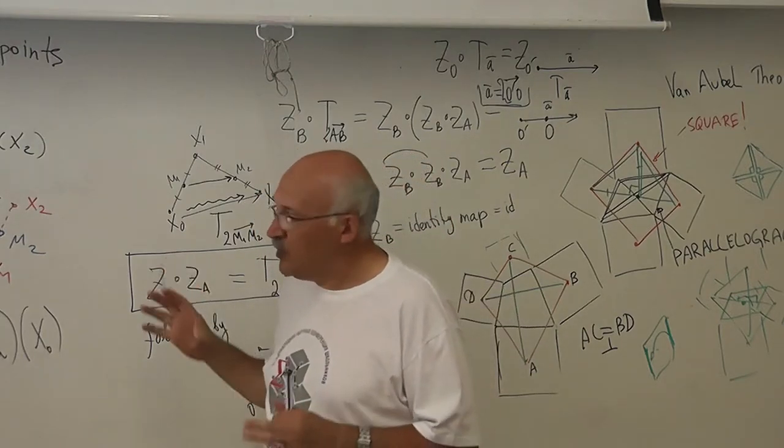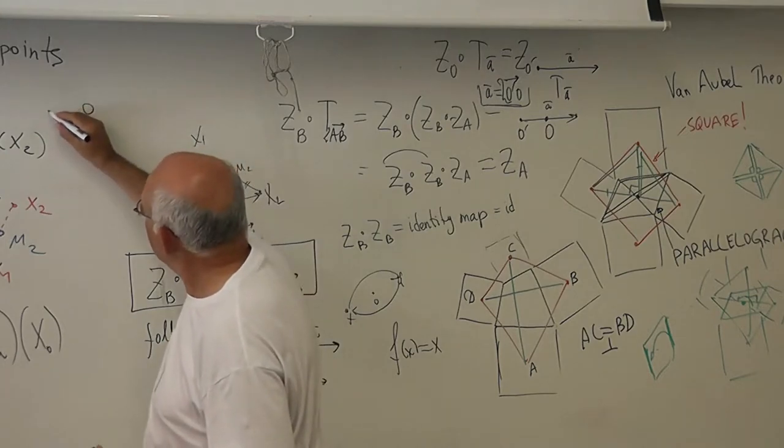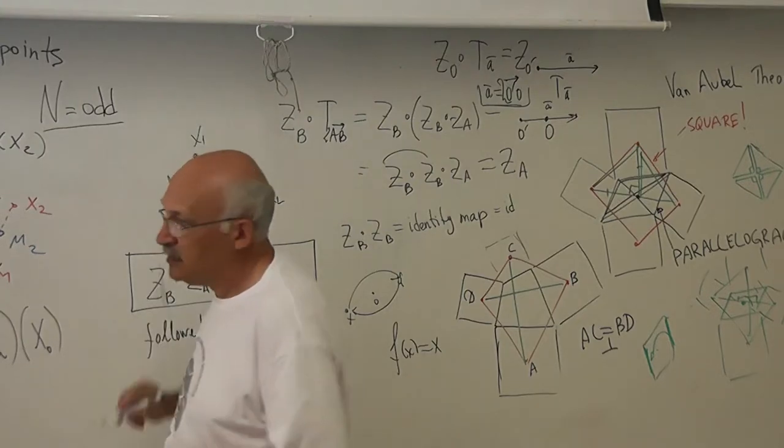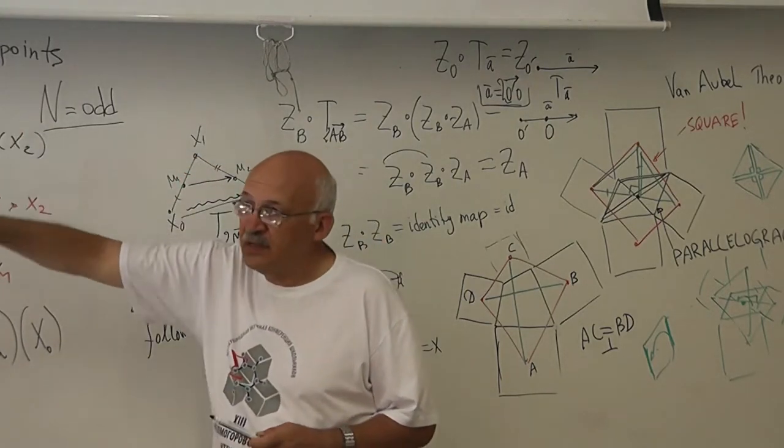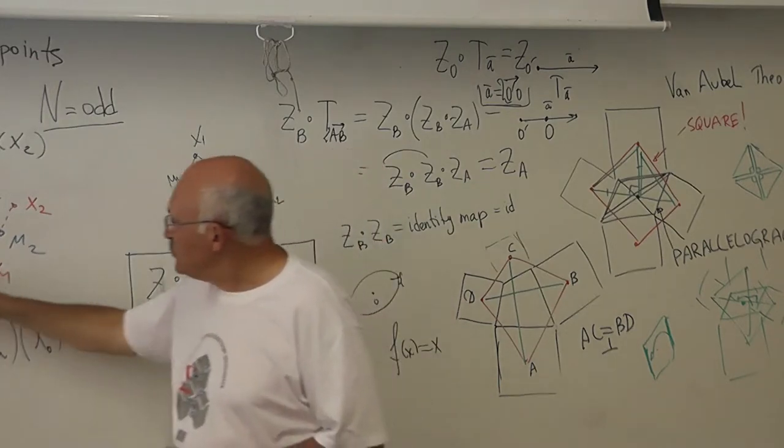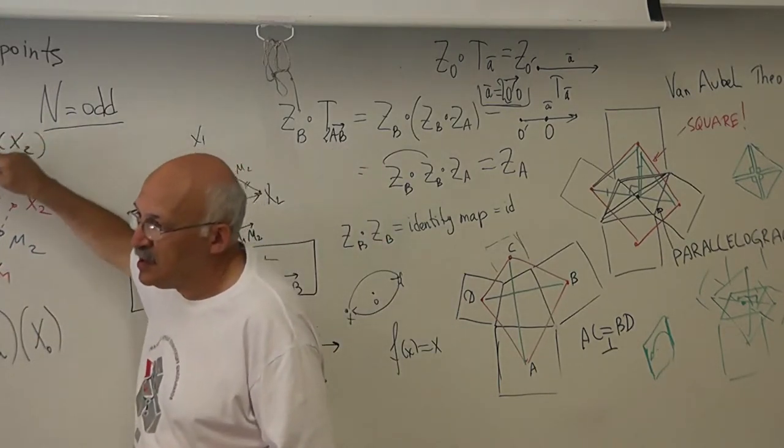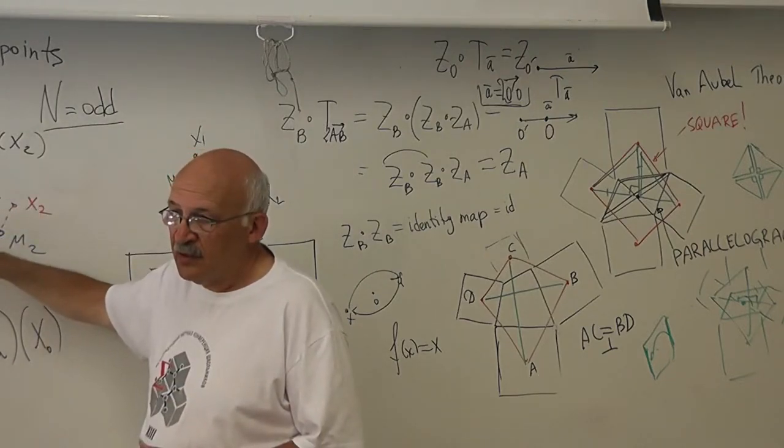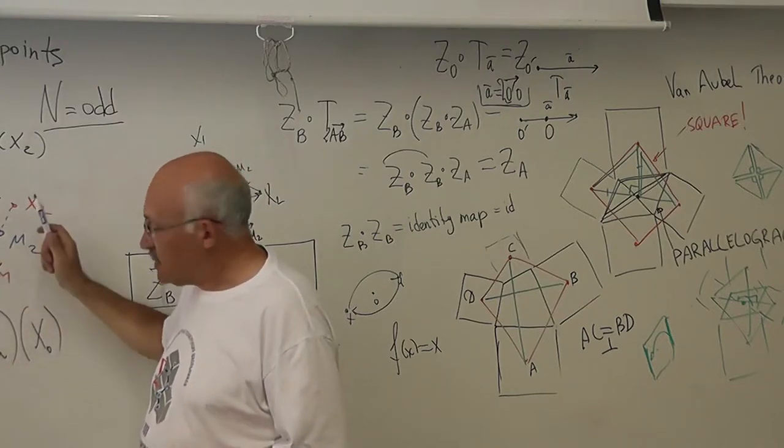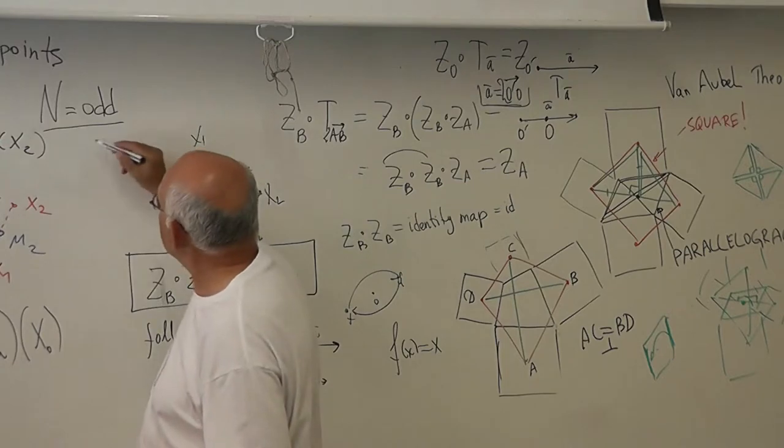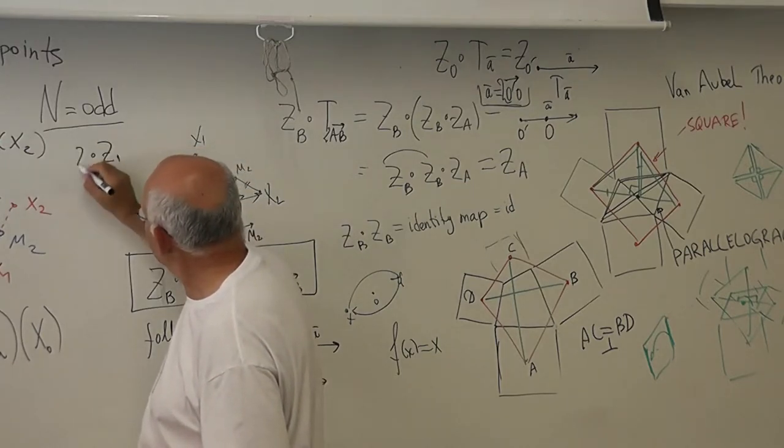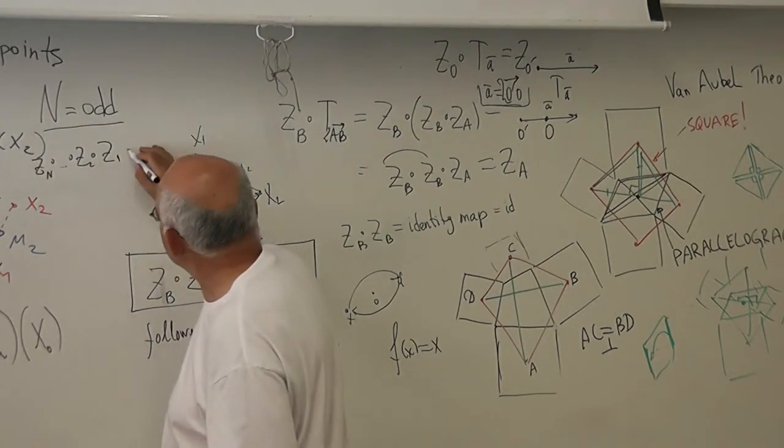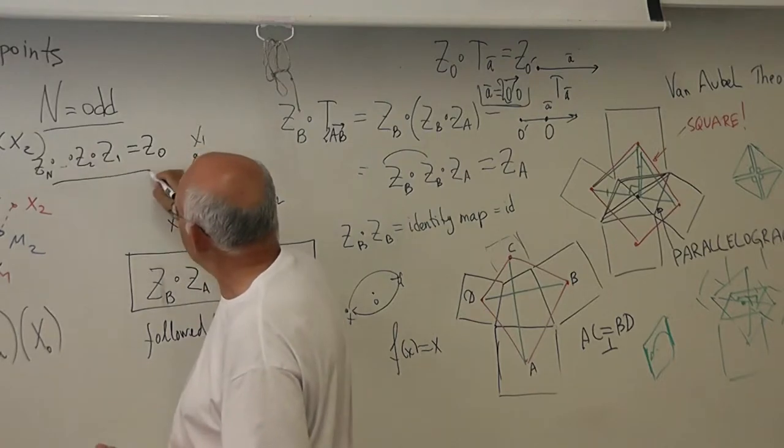If the number of points is odd, if the number of points is odd, then the number of points is N. First we have central symmetry, then translation. If N is odd, then we end with what? Central symmetry. So somewhere there will be a central symmetry: Z1, Z composed with Z2, followed by Z3, followed by ZN.